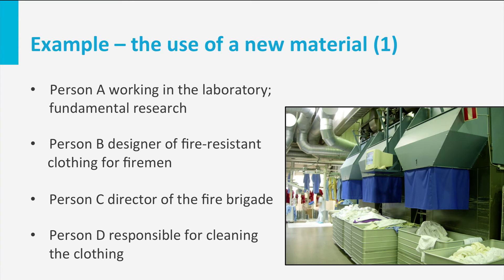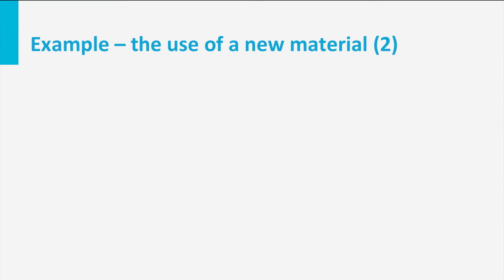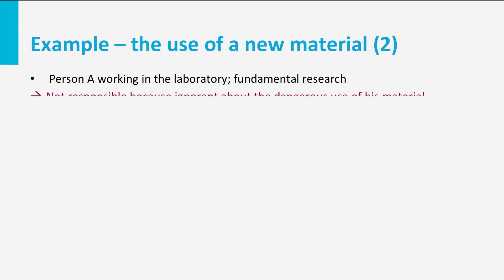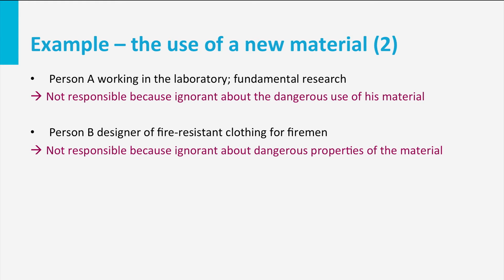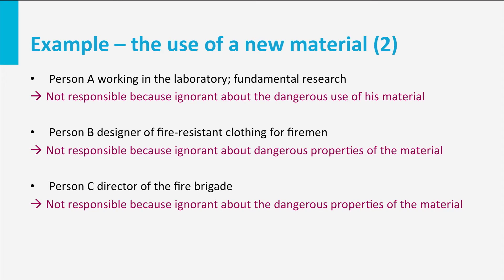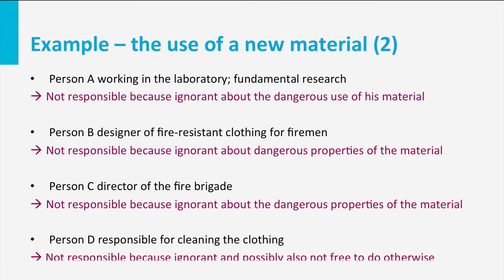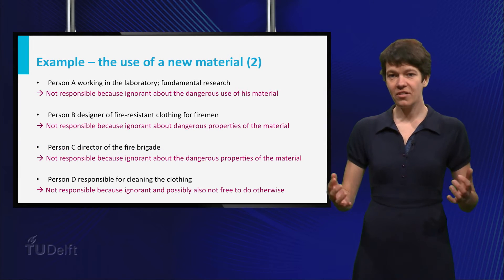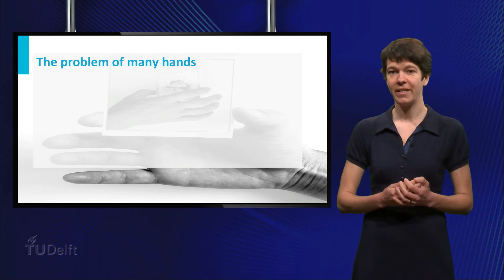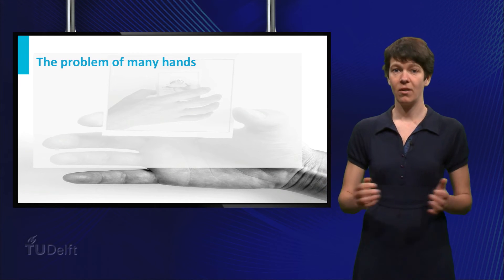Let us look at the four people. All persons made some causal contribution, but the other conditions are probably not fulfilled — at least none of the individual people fulfilled all conditions. The person working in the laboratory may have known that this material could have some chemical reactions with other materials, but he could not foresee how others would use the material. The other persons probably did not know about the carcinogenic properties of this new material. One may even say that the person responsible for the cleaning was not really free to act differently. So it is the actions of the four people together that lead to some dramatic outcome, but none of the individual persons can be held responsible.